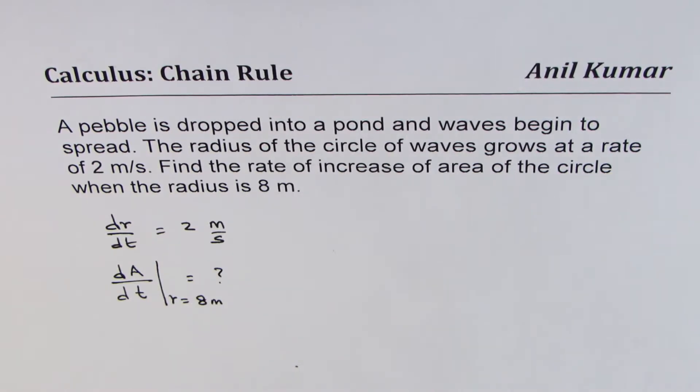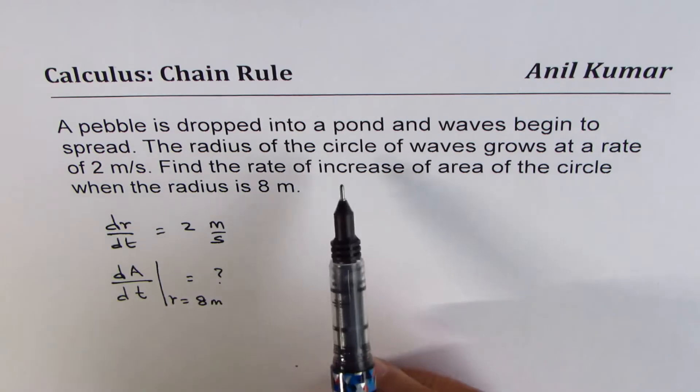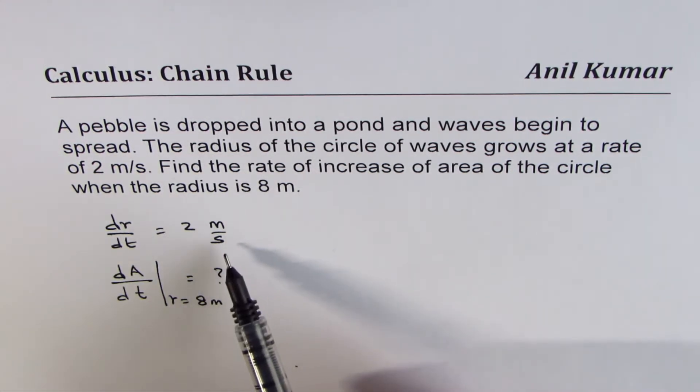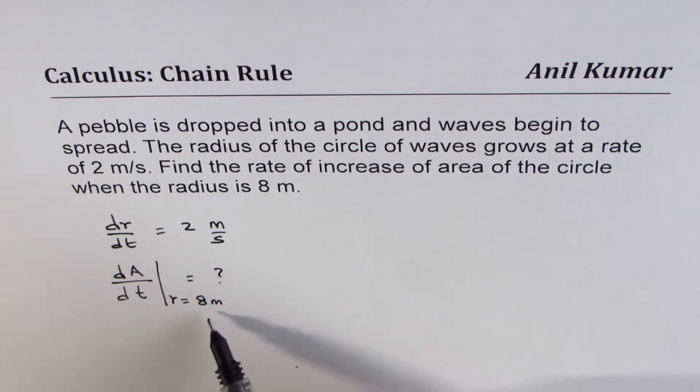I hope the question is very clear. We are given the rate at which the circle radius is increasing, which is 2 meters per second. And when the radius is 8 meters, we need to find rate of increase of area.